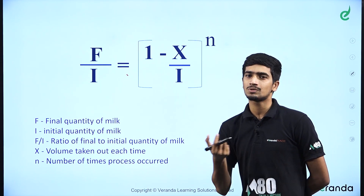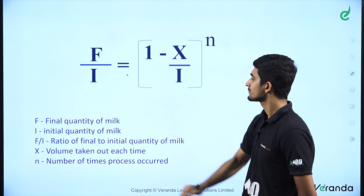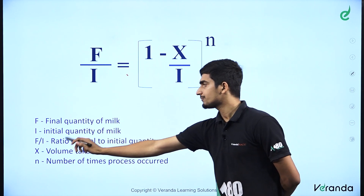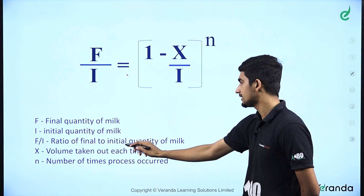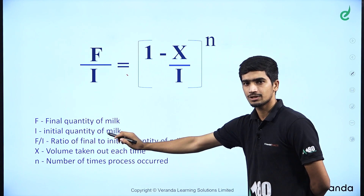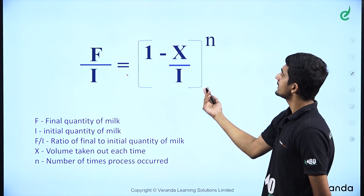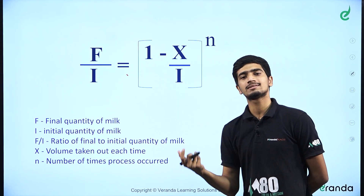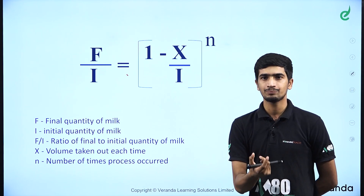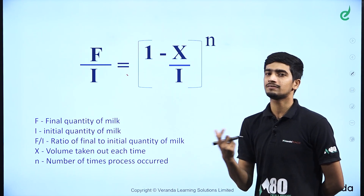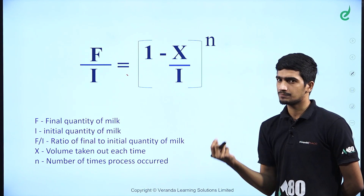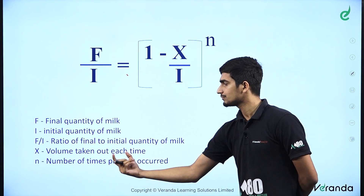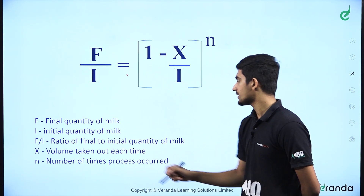Usually the question asks how much milk remains. I is the initial quantity of milk starting in the container. F by i is the ratio of the final to the initial quantity of milk. On the right-hand side, x is the volume taken out each time. Each time, we fill the mixture with a specific amount of water. N is the number of times the process is repeated.